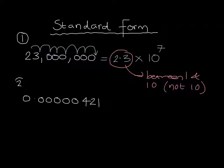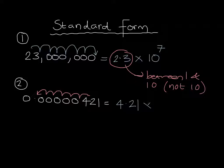When we're dealing with smaller numbers, the start of the number has to be between 1 and 10 but not equal to 10, so we choose 4.21. We then place the imaginary decimal point there at 4.21 and count the jumps — 1, 2, 3, 4, 5, 6 — until we reach the decimal point. This gives us 4.21 multiplied by 10 to the power of minus 6. Note the negative power because we're dealing with a smaller number.